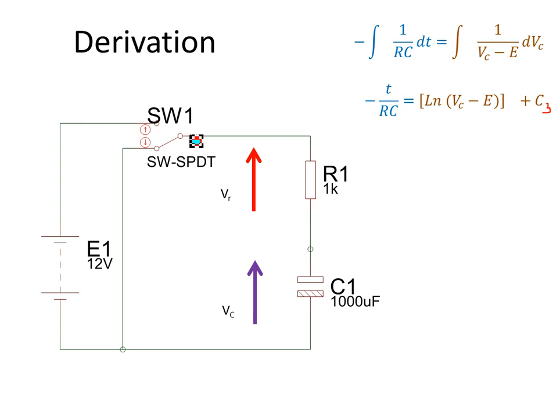When the switch is closed, time equals zero, and the voltage across the capacitor is zero. So I can say zero equals natural log of zero minus E plus my constant. Therefore C equals natural log of minus E.